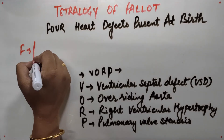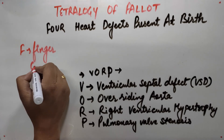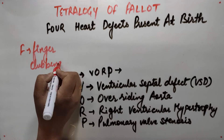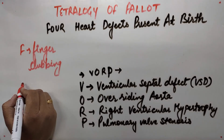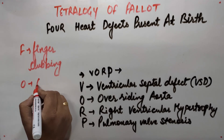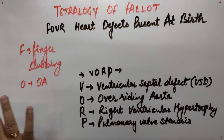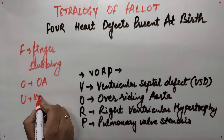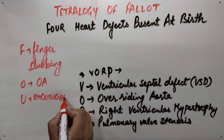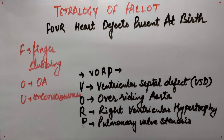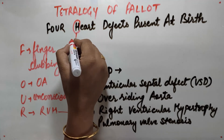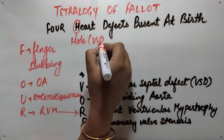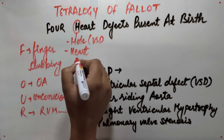F stands for finger clubbing, which is also called nail clubbing — it affects nails of fingers and toes. The O from 'four' stands for overriding of aorta again, as it also contains the defects. U stands for unconsciousness, which occurs during the Tet spell. R again stands for right ventricular hypertrophy. H from 'heart' stands for hole, which is VSD, and also stands for heart murmurs.